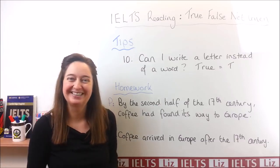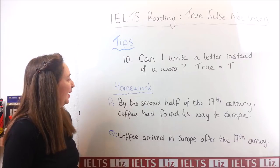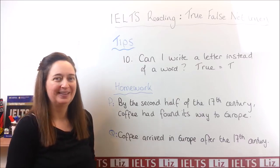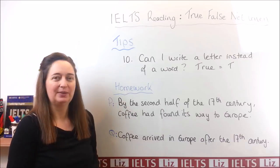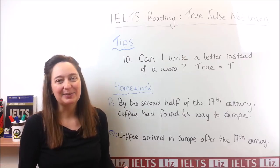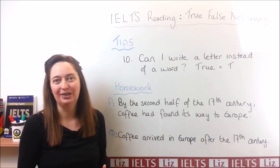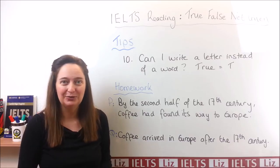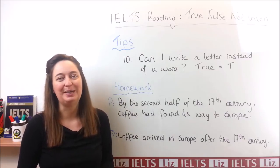Now before we finish, here's your homework. This is a True, False, Not Given question. The information in the passage: 'By the second half of the 17th century, coffee had found its way to Europe.' And the question: 'Coffee arrived in Europe after the 17th century.' Decide: is it true, false, or not given? I will give you a link to find the answer to your homework and to practice more True, False, Not Given and Yes, No, Not Given questions for free, along with links to other IELTS lessons. I hope that was useful for you. If you found it useful, please press like. If you have any questions, just post them for me. See you soon.